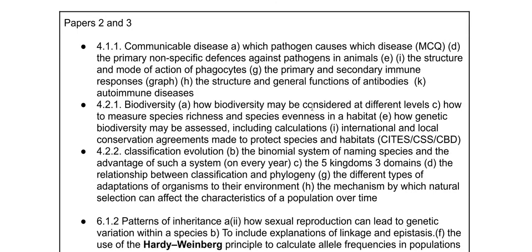For papers two and three, in communicable diseases, the pathogens causing disease comes up every year. Primary defences haven't been on for ages, and the mode of action of phagocytes and phagocytosis — make sure you're familiar with the microscope image. I think the graph of the primary and secondary immune response might come up, so make sure you can explain each part. The structure and function of antibodies might link back to transcription and translation, and the ultrastructure of a plasma cell — the organelles enabling it to make that protein. New diseases might also link into stem cells.